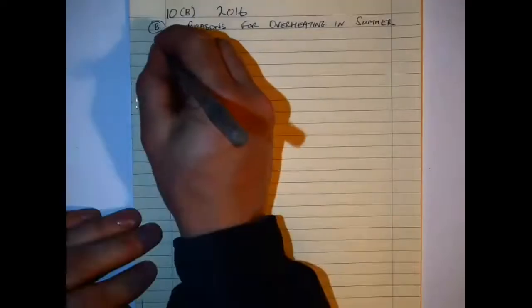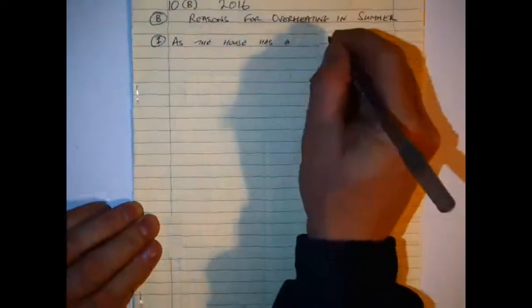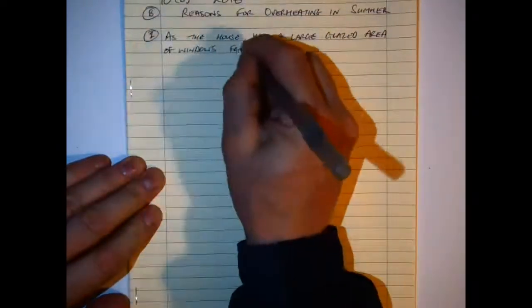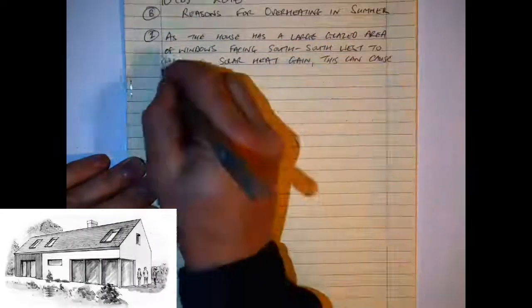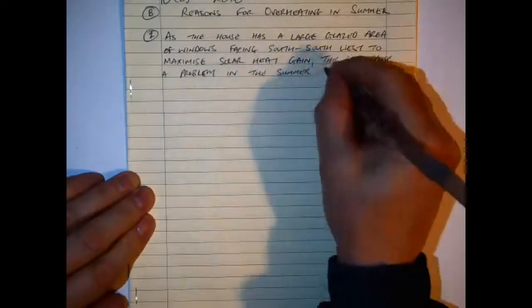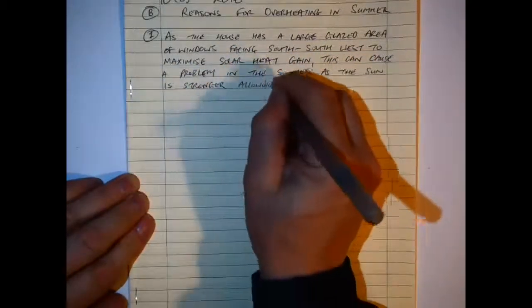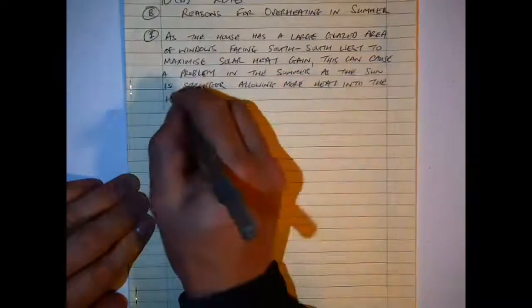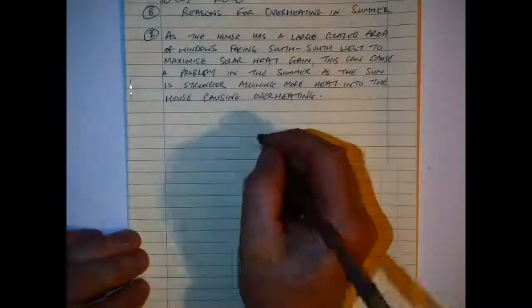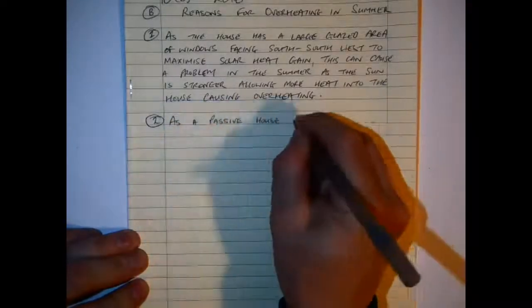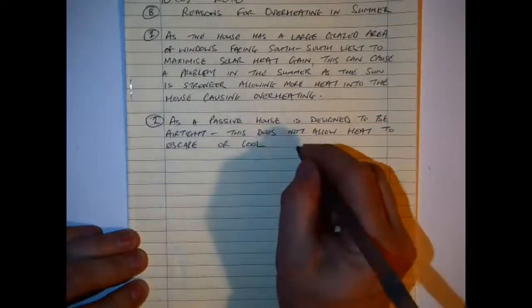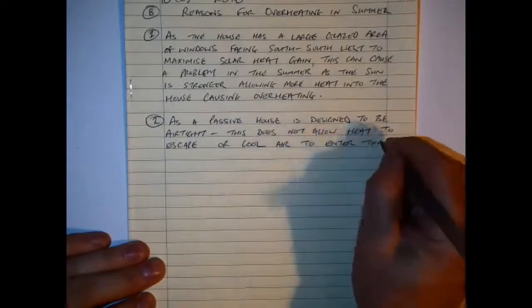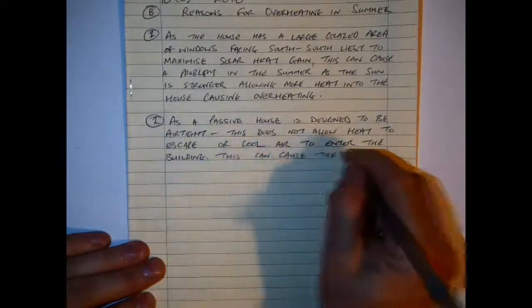Part B of the question. It is looking for two reasons why overheating occurs. So this is kind of just a written answer. So as the house has a large glazed area of windows facing south or southwest to maximize the solar heat gain, this can cause a problem in the summer as the sun is stronger and it allows more heat into the house causing overheating. So a very simple answer. And the second reason that I would give for overheating is a passive house is designed to be airtight. It does not allow heat to escape or cool air to enter the building and this can cause the house to overheat in summer.